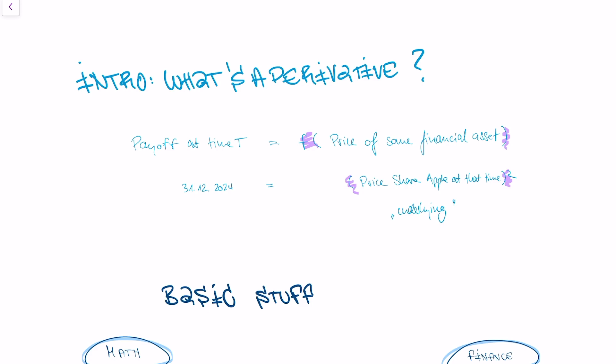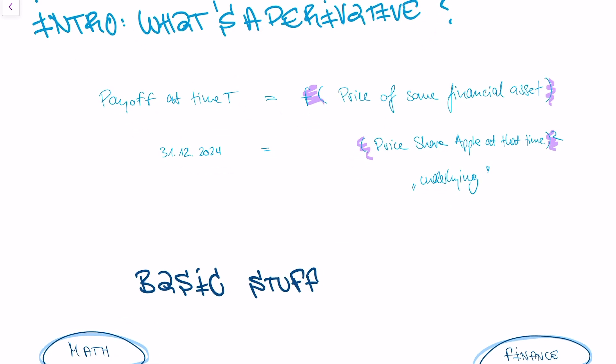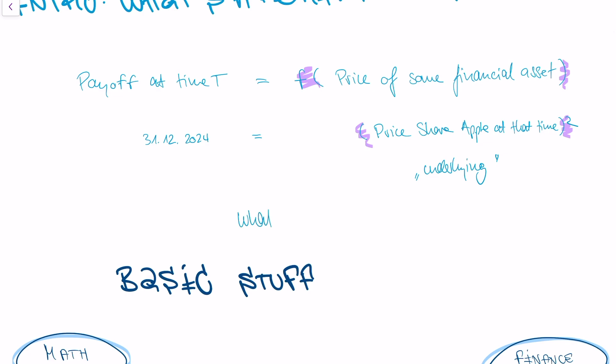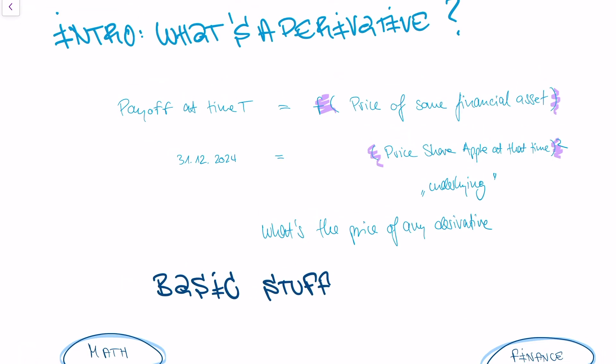Black-Scholes actually allows you, gives you a way of thinking on what this derivative is actually worth. So what do I have to pay in order to get the claim to the price of the Apple share squared on the 31st of December of 2024? Black-Scholes answers the question: what's the price of any derivative? And that's what we're going to cover in the next videos.